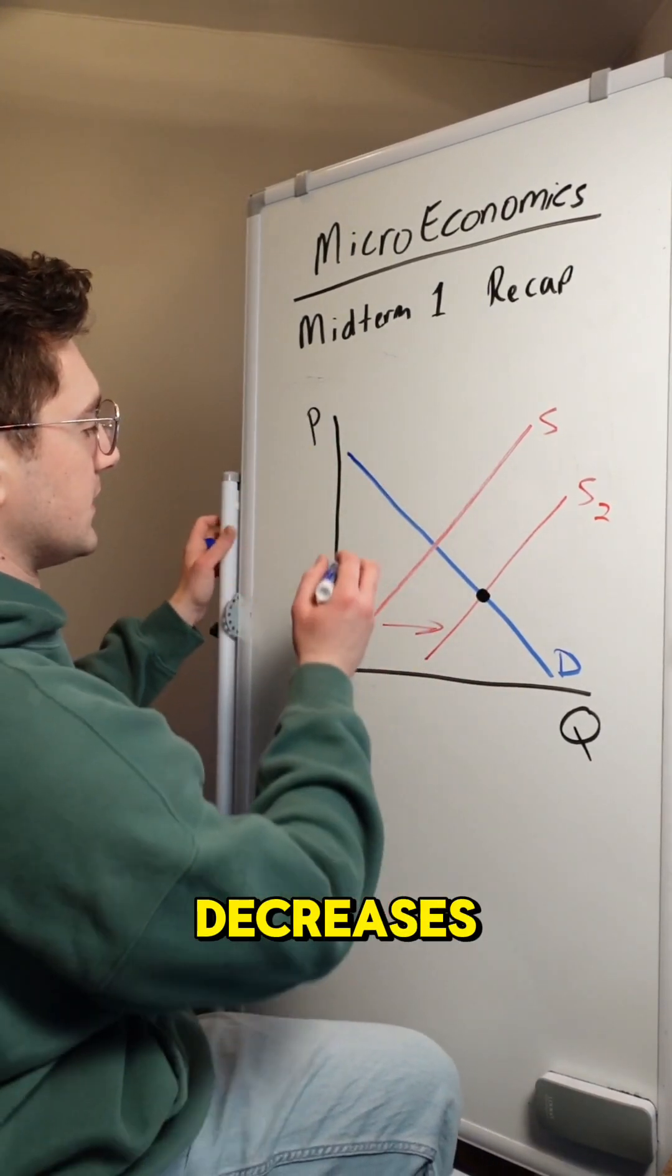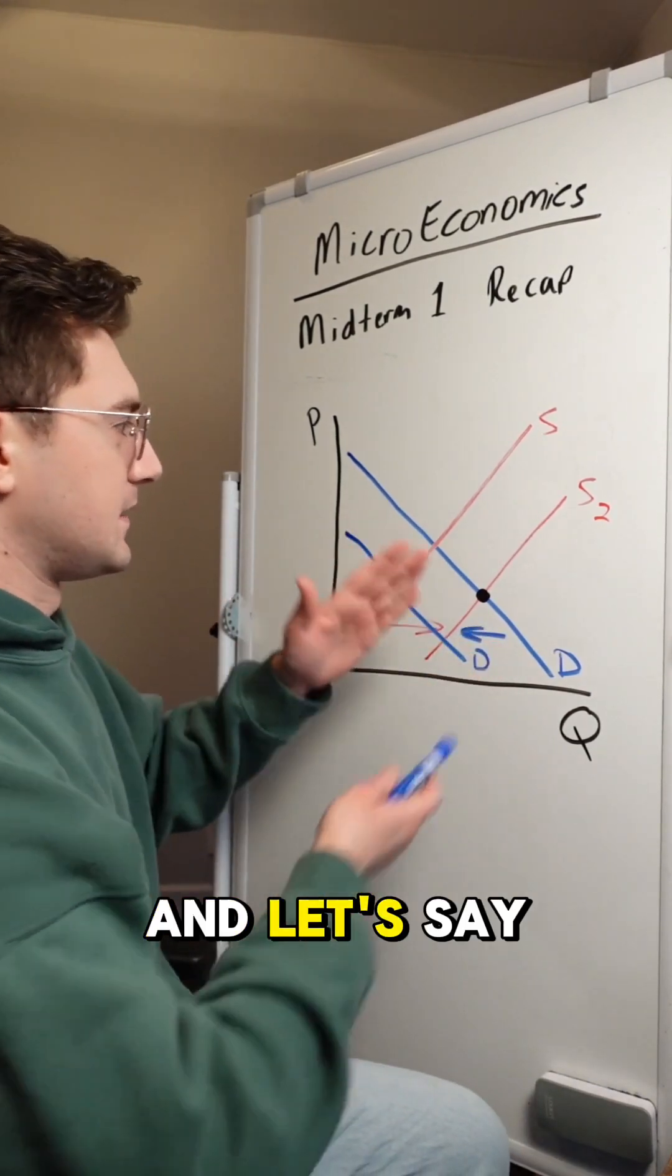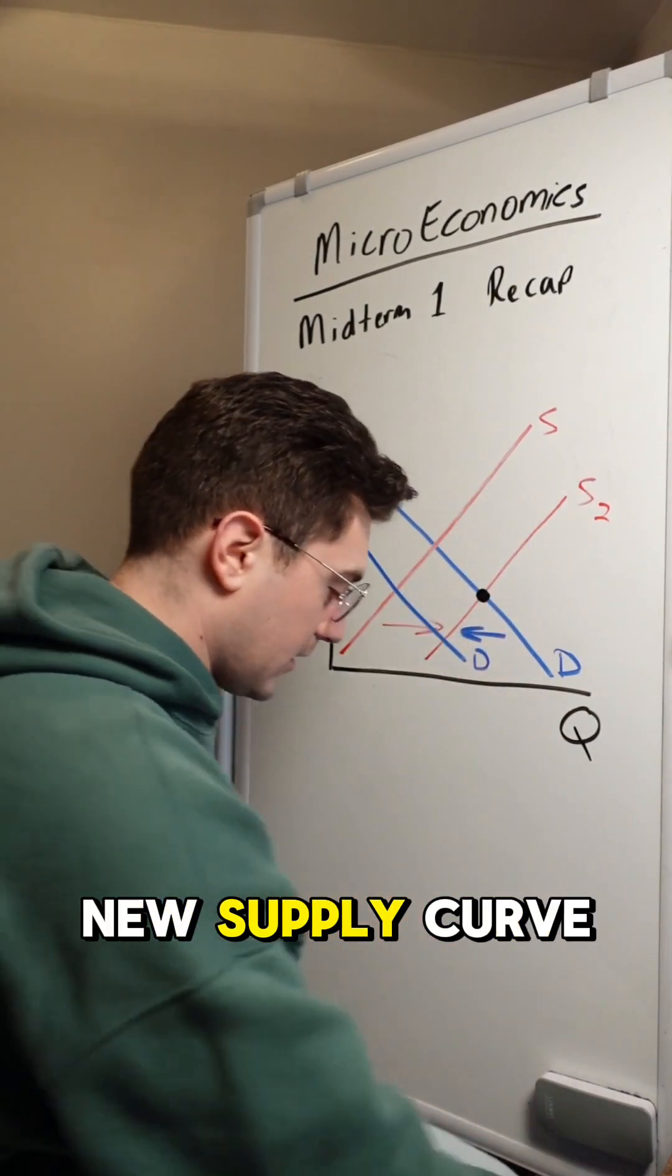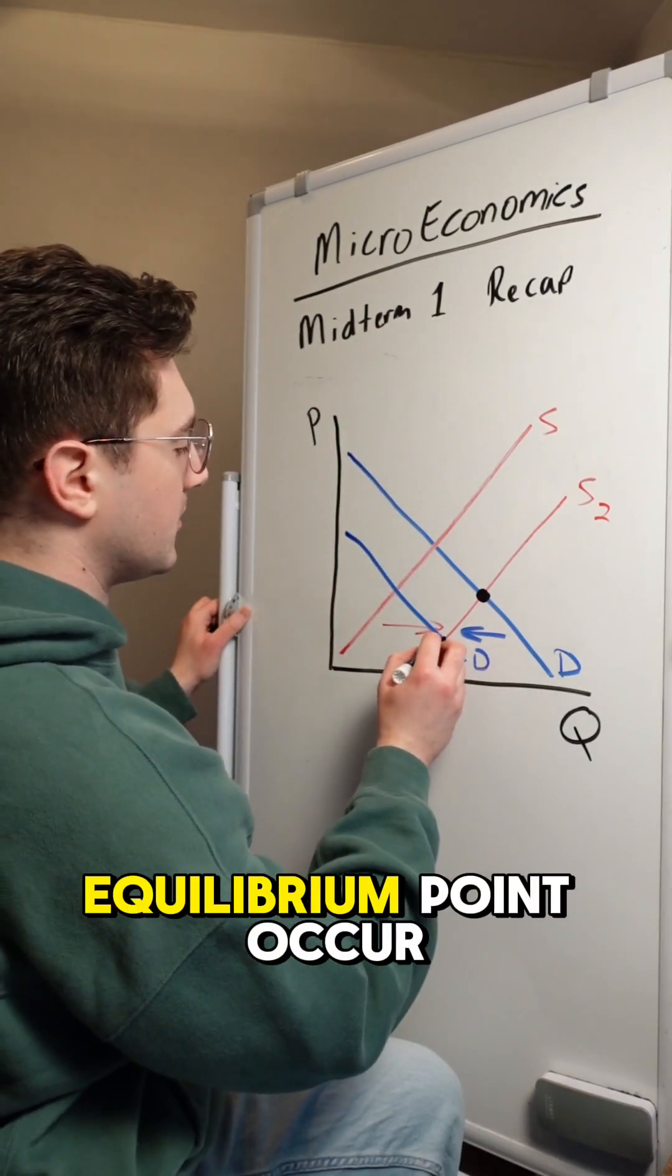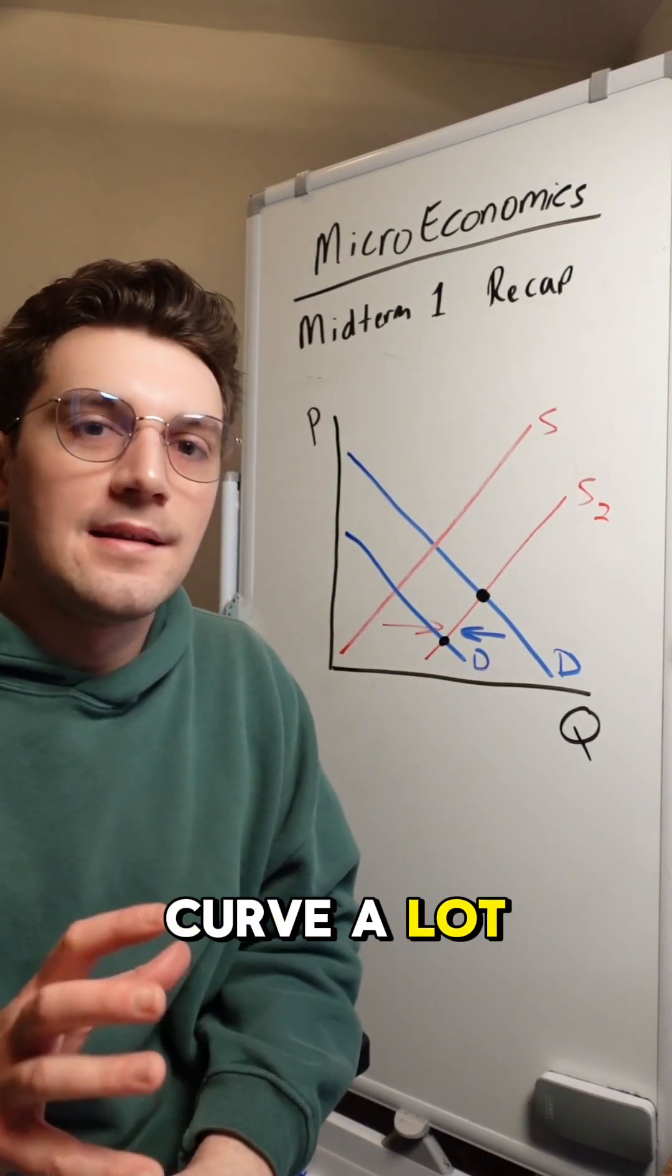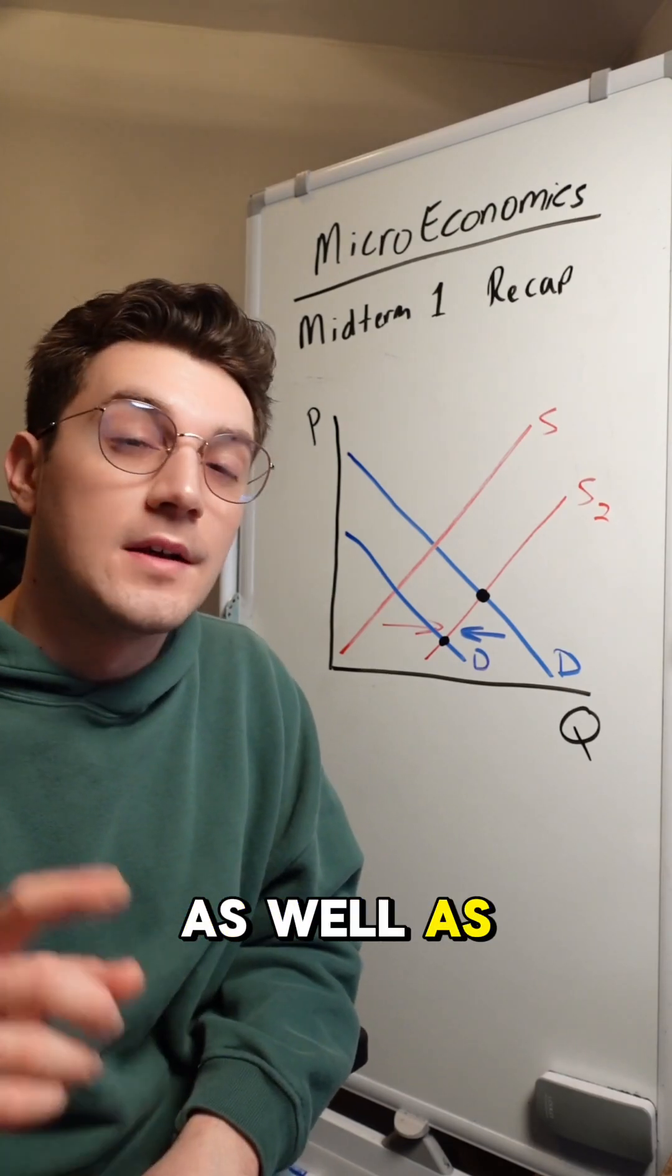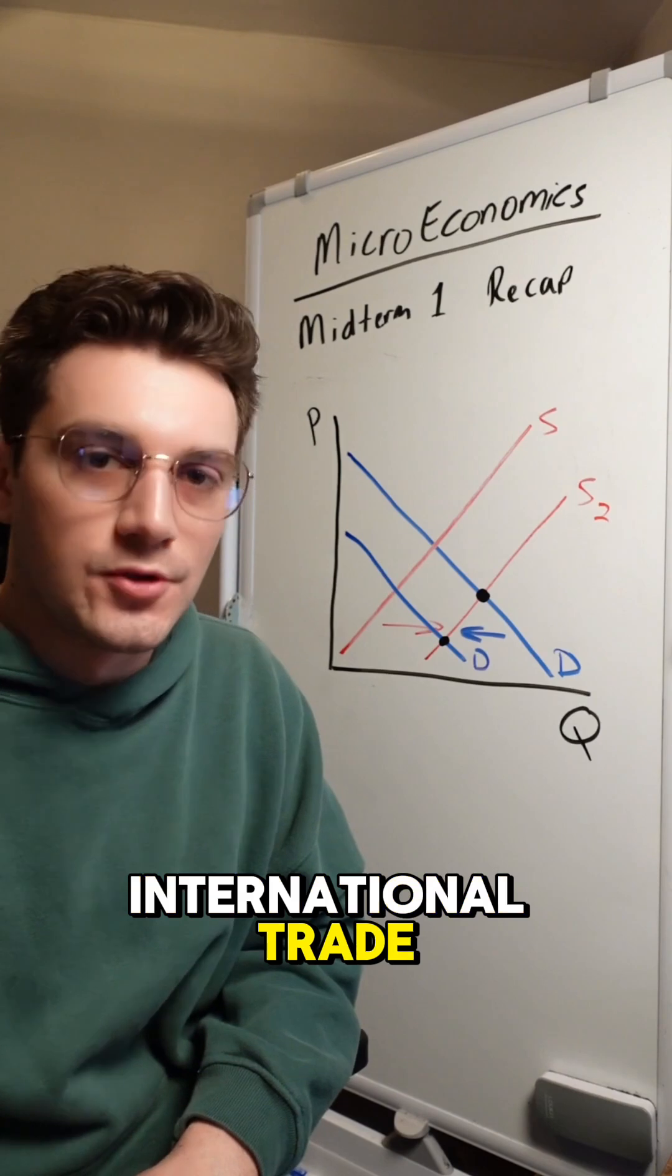Let's say the problem says demand decreases. I'd write that like this because I'm shifting demand to the left. And let's say we're using our new supply curve as well. Now our equilibrium point would occur right there. You're going to be shifting the supply curve a lot later in the semester when we run into taxes as well as quotas in international trade.